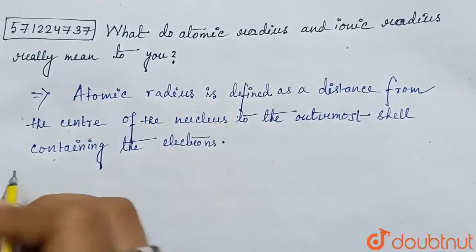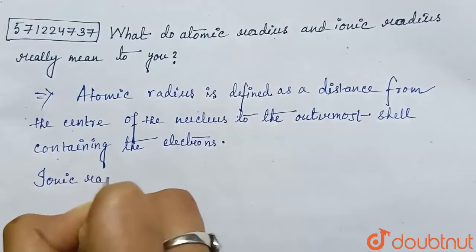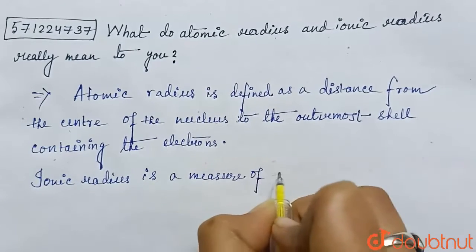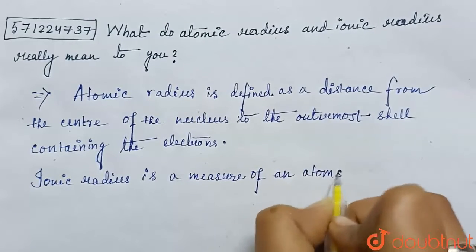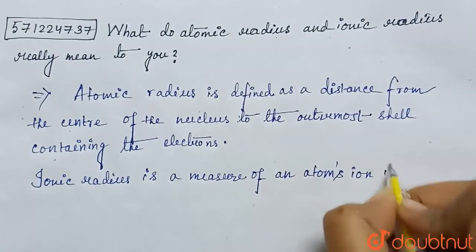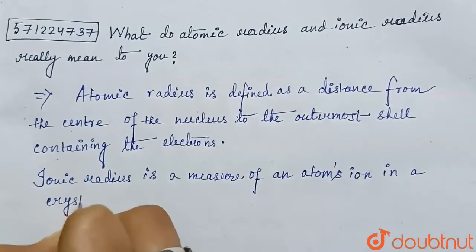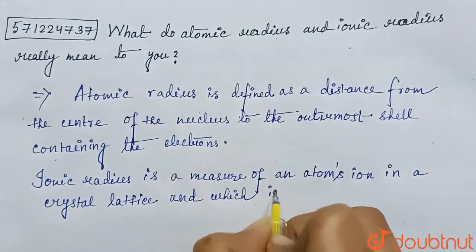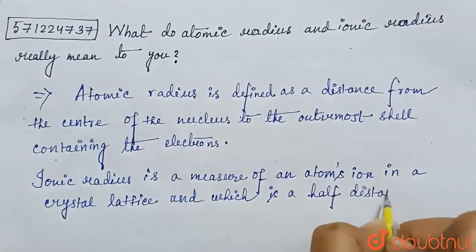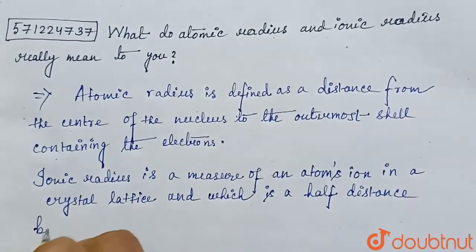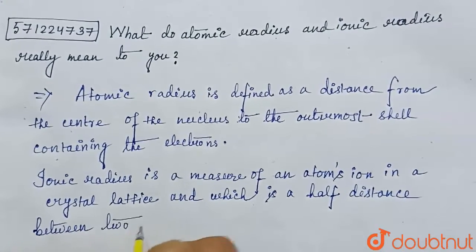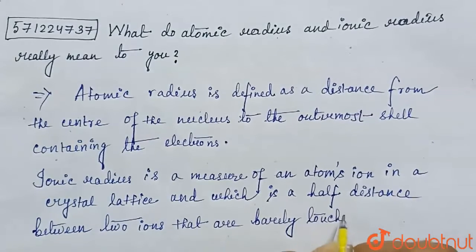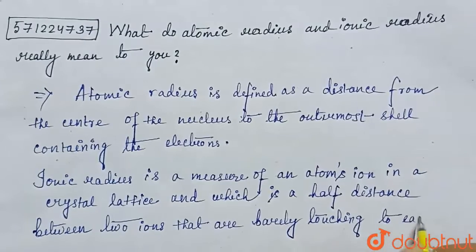This is called the atomic radius. And ionic radius: ionic radius is a measure of an atom's ion in a crystal lattice, and which is the half distance between two ions that are barely touching each other.